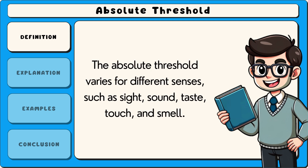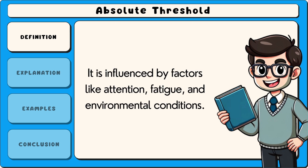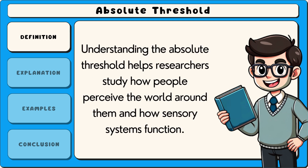The absolute threshold varies for different senses such as sight, sound, taste, touch, and smell. It is influenced by factors like attention, fatigue, and environmental conditions. Understanding the absolute threshold helps researchers study how people perceive the world around them and how sensory systems function.